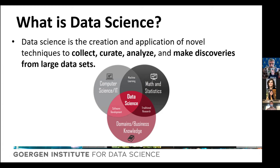What's interesting about this Venn diagram is that two out of three fields have always created interdisciplinary fields. In traditional research, you use math and statistics combined with domain data. In software development, you embed IT tools into a domain. In areas like machine learning, you combine math and statistics with computer science. But what's happened recently is this unique combination of all three discrete fields together.